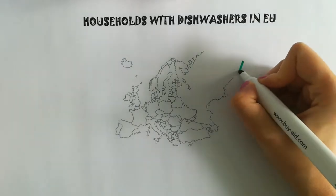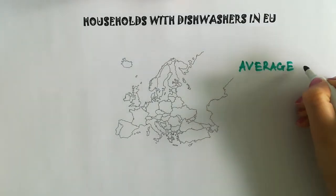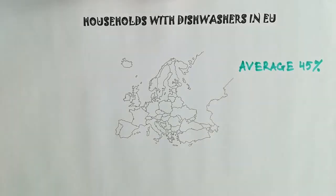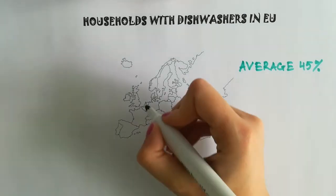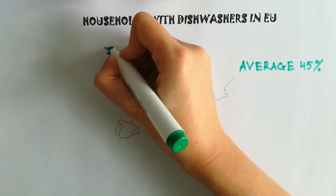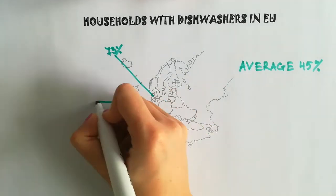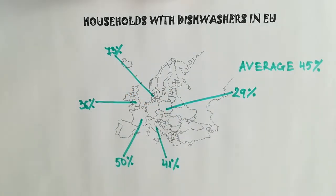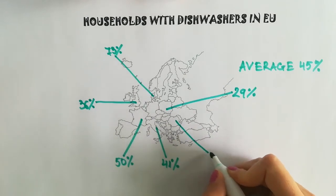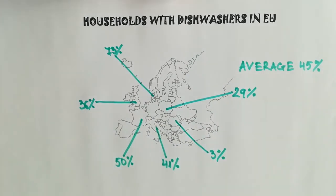But back to reality. On average, only 45% of the households in the EU actually have a dishwasher. This is quite low, and the average also hides big discrepancies among the different countries. 73% of the households in Denmark have a dishwasher, 50% in France, 41% in Italy, 36% in the UK, 29% in Poland, while in Romania this is only 3% of the households. This shows that we need to keep in mind that different countries are facing different realities, while we do actually need one single European policy.